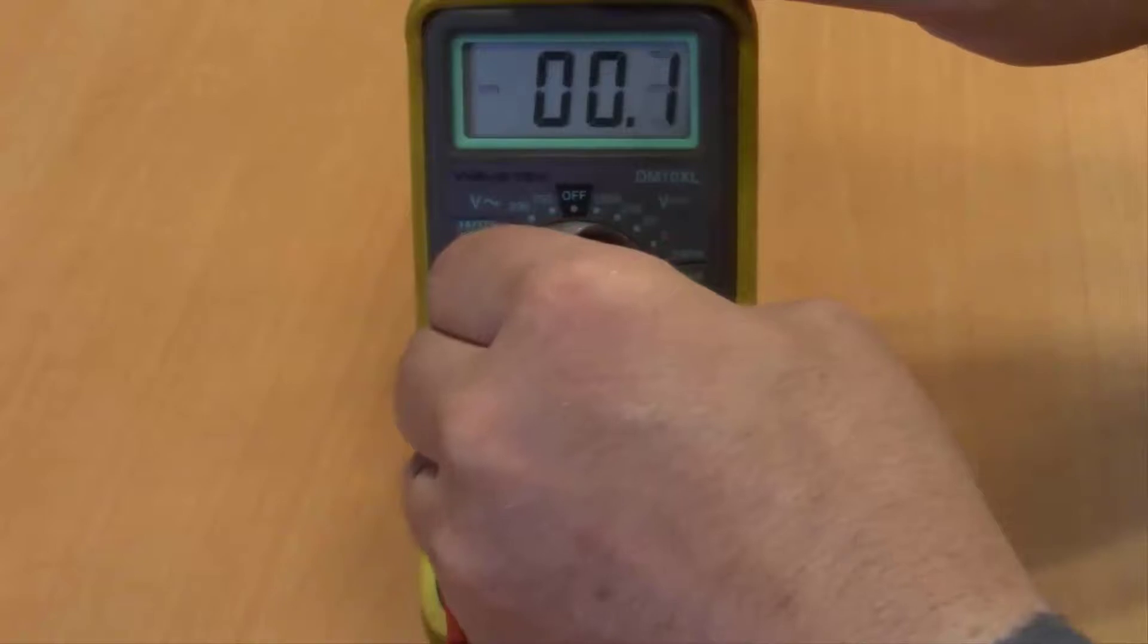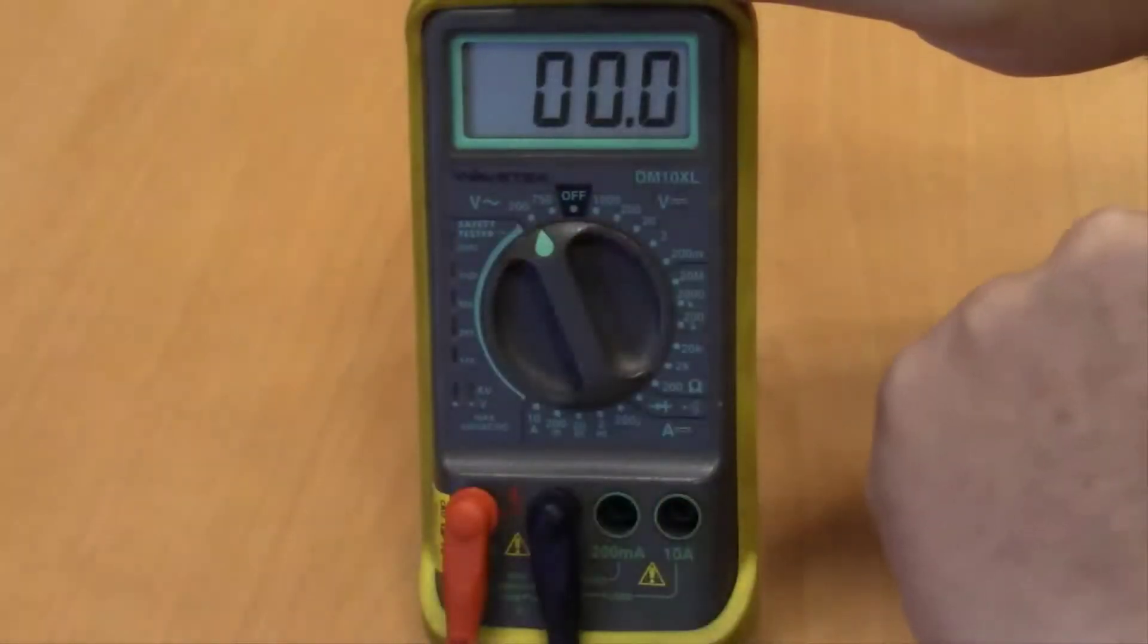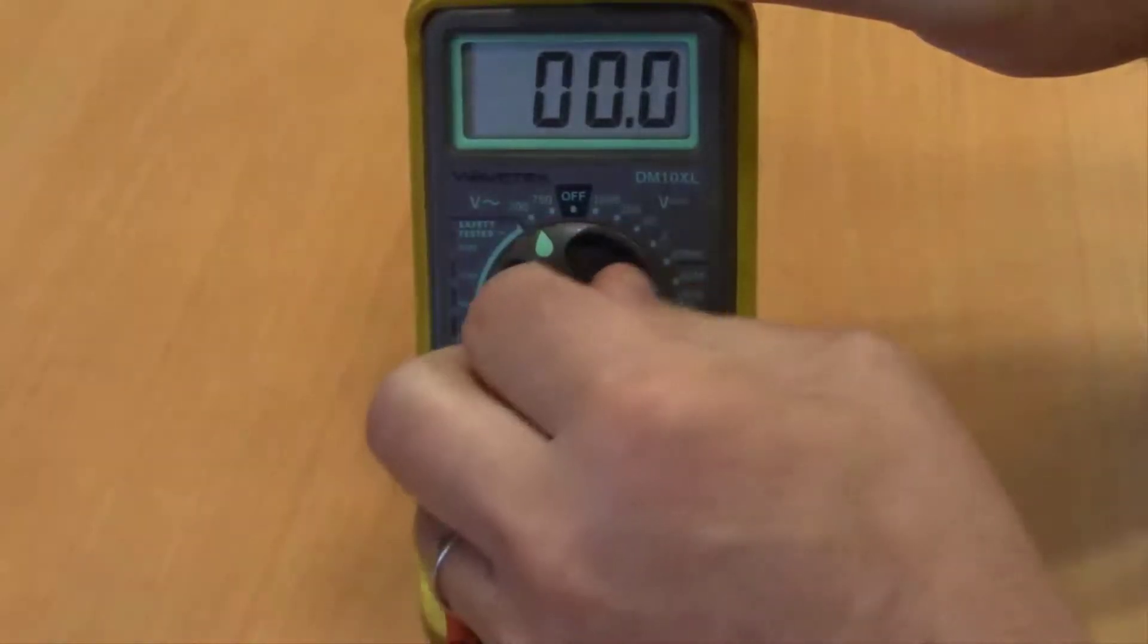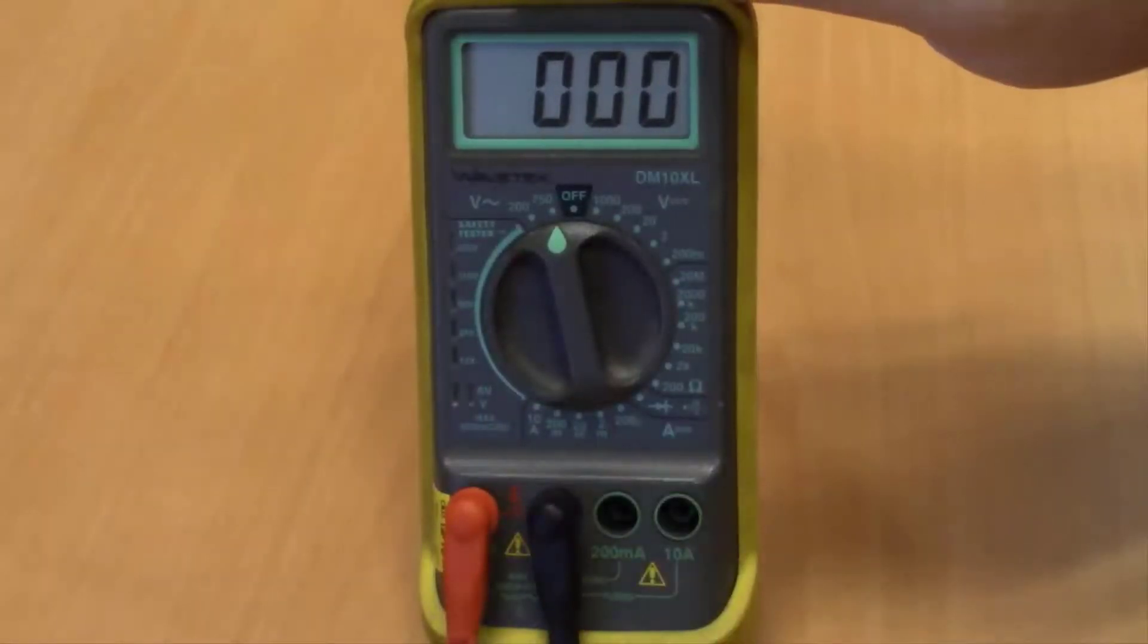Past that you have two more settings for voltage AC. You can see the symbol there for AC. You can select between 200 and 750. It will display a value when you use that setting for AC.